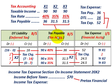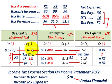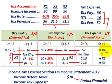Now that we know our tax payable and deferred tax liability, we can determine tax expense — it's essentially the plug. For year X1: we had a credit of $36,000 for tax payable and a credit of $16,000 for deferred tax liability, so the balancing debit to tax expense is $52,000. Tax payable $36,000 plus deferred tax liability $16,000 equals tax expense of $52,000.